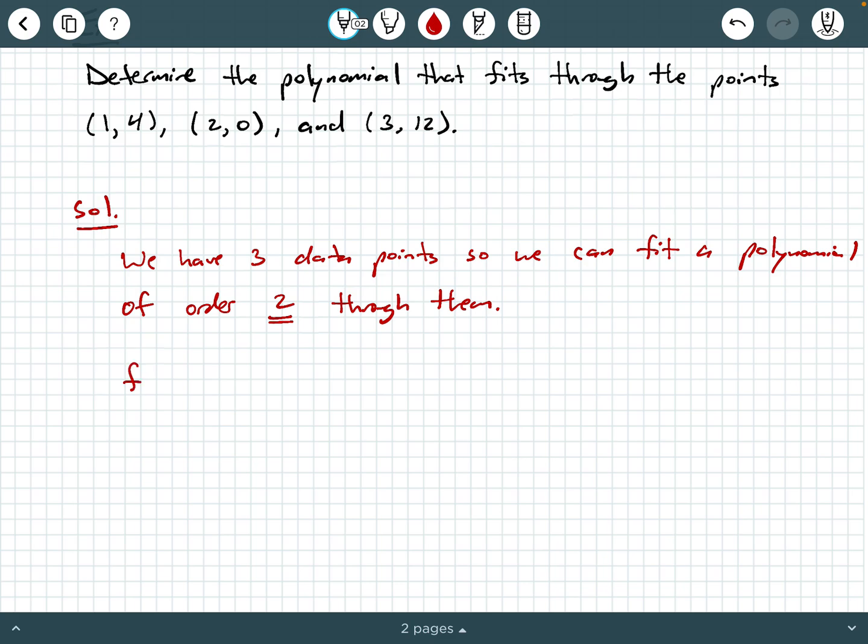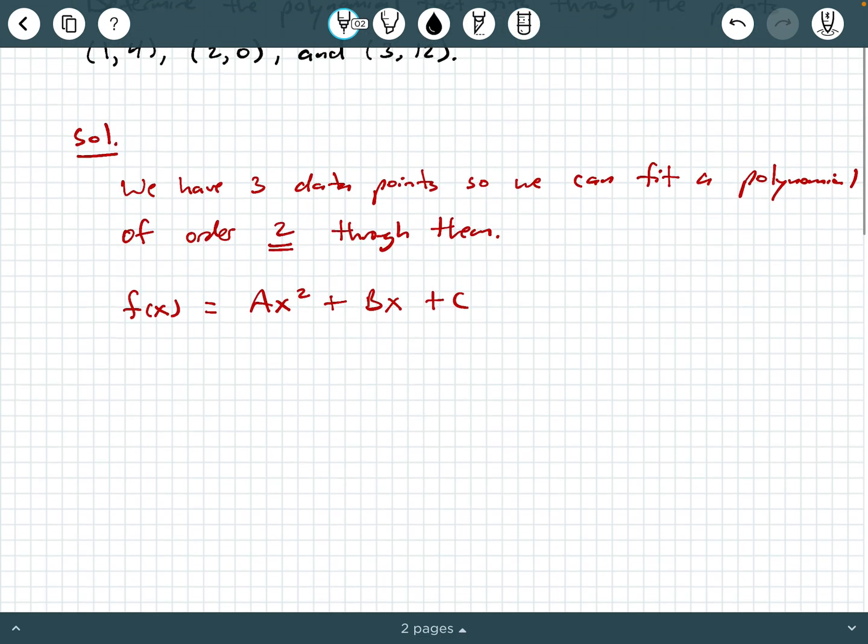So the general form of a quadratic function is f(x) = Ax² + Bx + C. And so from this point on, we're going to follow the same kind of procedure that we followed in the previous example where we fit a linear function through two data points, except now it's just a quadratic function through three data points. So what I'm going to do is I'm going to write a general polynomial of order 2 through each one of these data points.